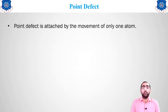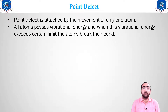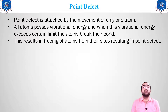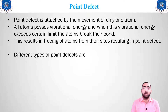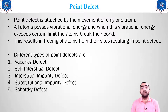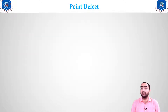Let us start with the first one — point defect. It is caused by the movement of only one atom; only one atom is responsible for the defect. All atoms possess vibrational energy, and when the crystal is in position, atoms constantly vibrate. When this vibrational energy exceeds a certain limit, the atom breaks the bond and goes away, resulting in a point defect. The different types of point defects are: vacancy defect, self-interstitial defect, interstitial impurity defect, substitutional impurity defect, Schottky defect, and Frenkel defect.